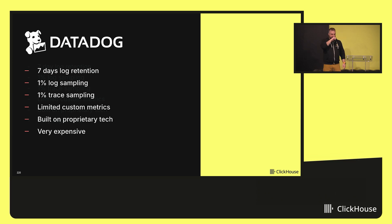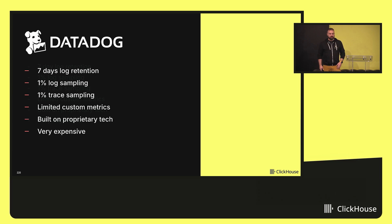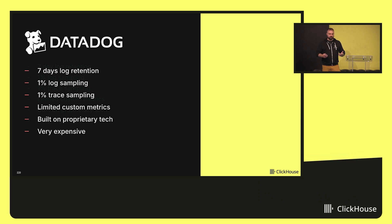When we started the company, we had to kick-start the observability story, and as many companies do, we chose an ad hoc solution to start with. It was very easy to get running. We could focus on other things while enjoying having the SaaS there. However, pretty soon we realized it just didn't meet our requirements. The monthly bill was growing uncontrollably, and we weren't getting what we wanted out of it. So after some time trying to find a balance between cost and functionality, this is what we ended up with.